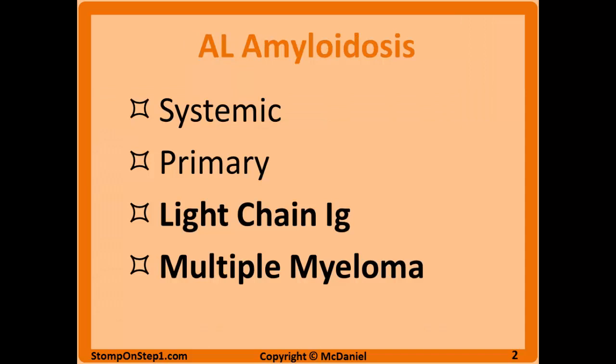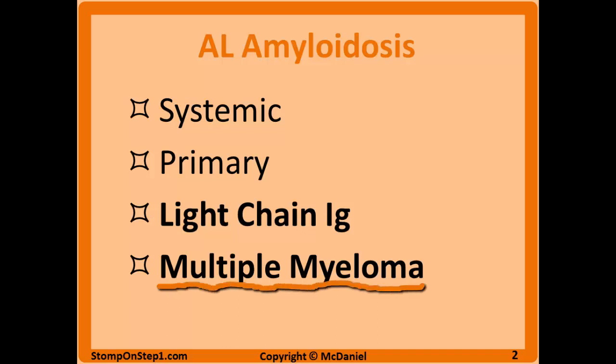Now we can talk about some specific types of amyloidosis. We'll go through these pretty quickly because Step 1 questions tend not to dive into too much depth here. AL amyloidosis is an amyloid that forms from light chain immunoglobulins — that's the protein that's going to aggregate. It's systemic, so you can find it in many different organs, and it's usually related to a disease like multiple myeloma or some sort of plasma cell disorder, which creates an excess of light chain portions of the antibodies that then aggregate.